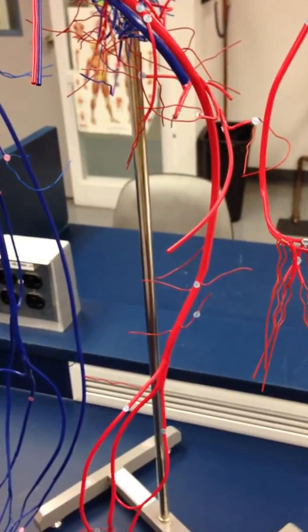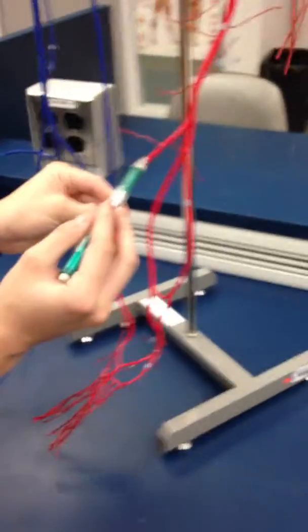Anterior tibial is number 127 in the leg which is this one right here. It's in the very front.